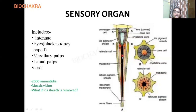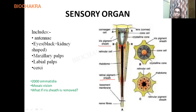Now, one ommatidium needs to be separated from another. One ommatidium is here, another is there — they need distinction. That is why two sheaths are present: the iris pigment sheath and the retinal pigment sheath. Both of these sheaths separate one ommatidium from another. The diagram shows the location of each sheath.